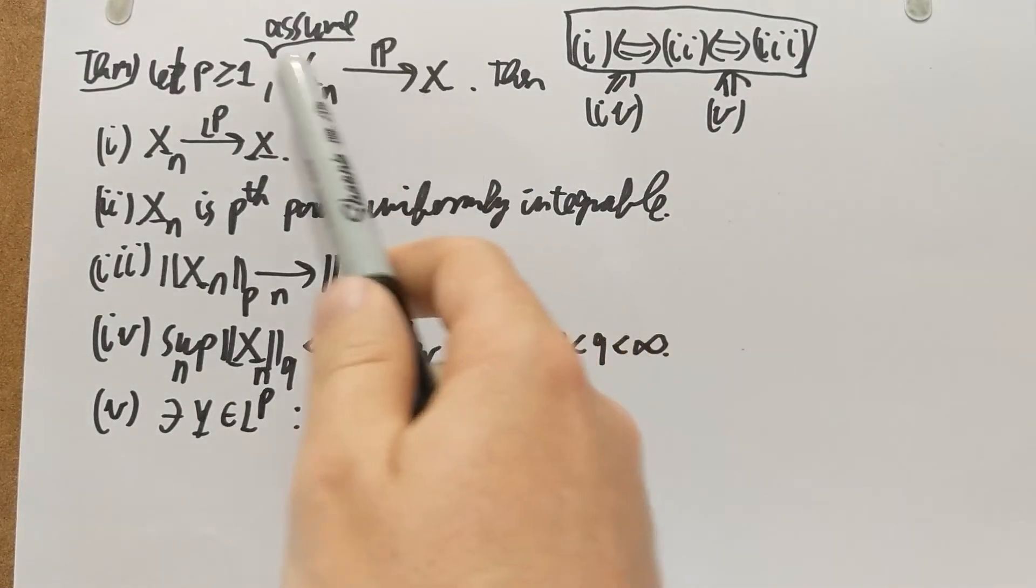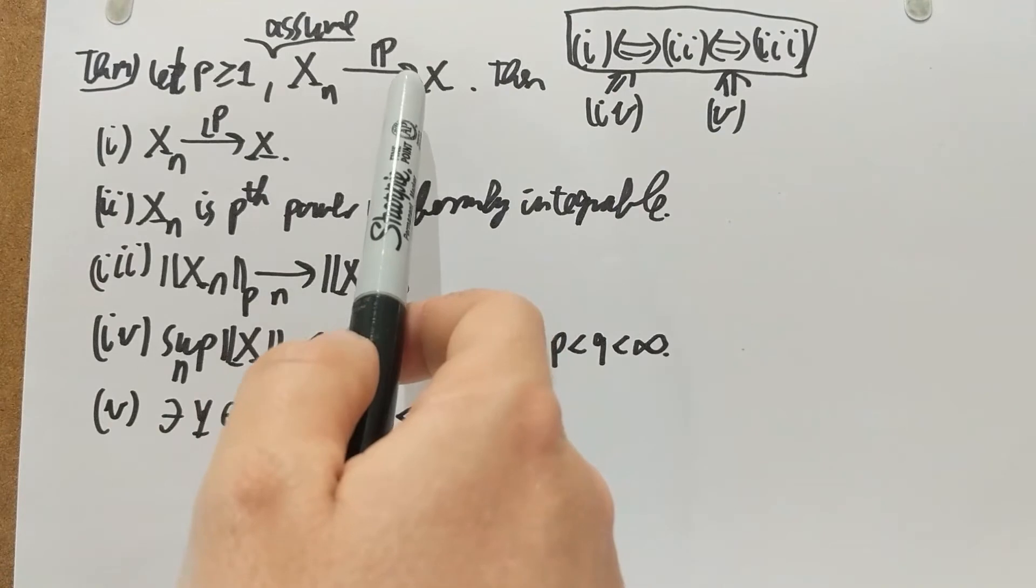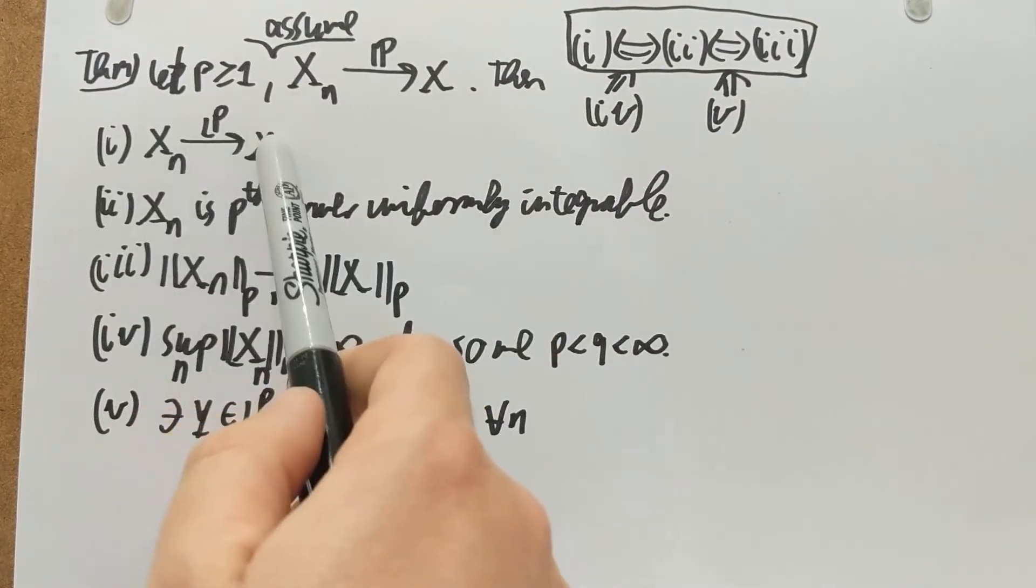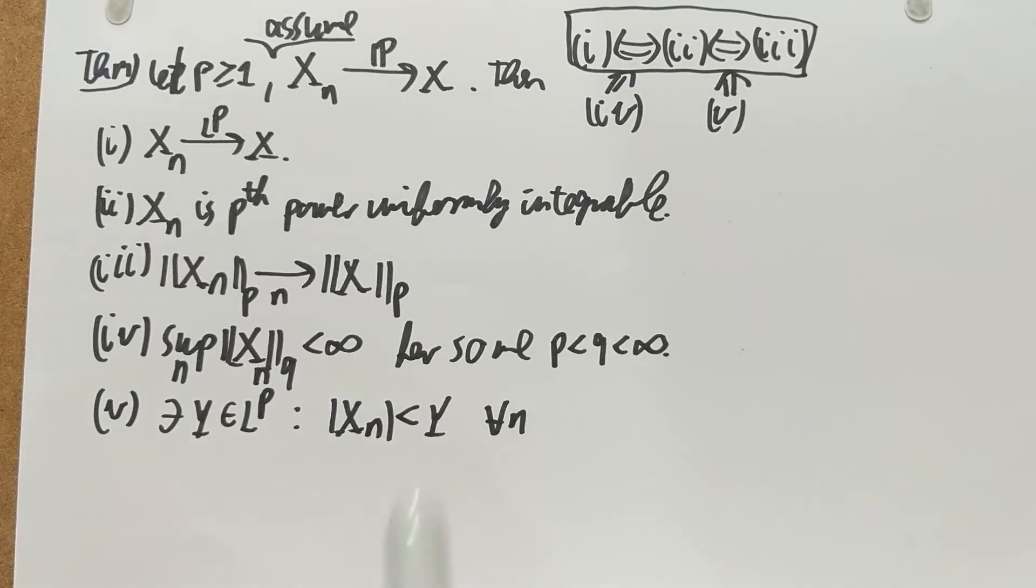Okay, so the theorem is that if we have in probability convergence, then these three are equivalent. So once this is fixed, when we know convergence in probability, lp convergence is equivalent to being p's power uniformly integrable. It's also equivalent to the p norms themselves converging.